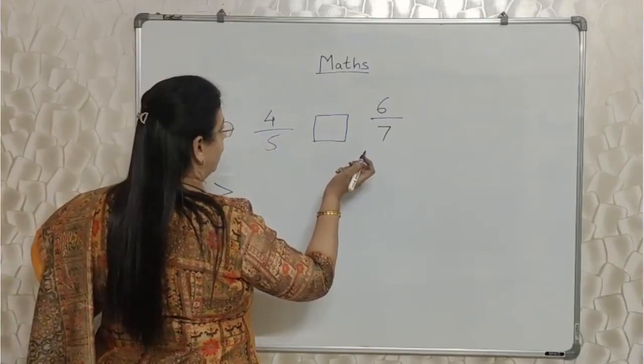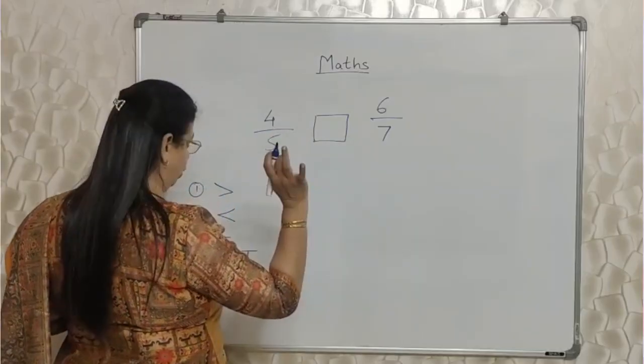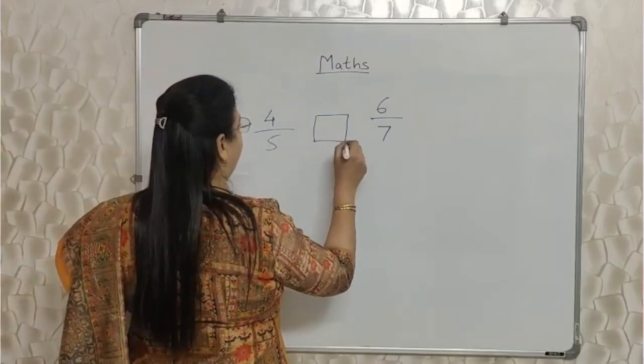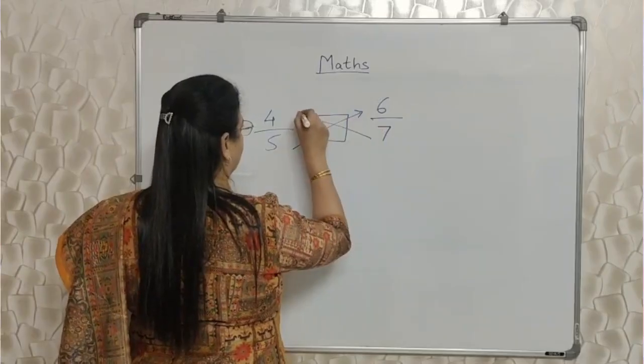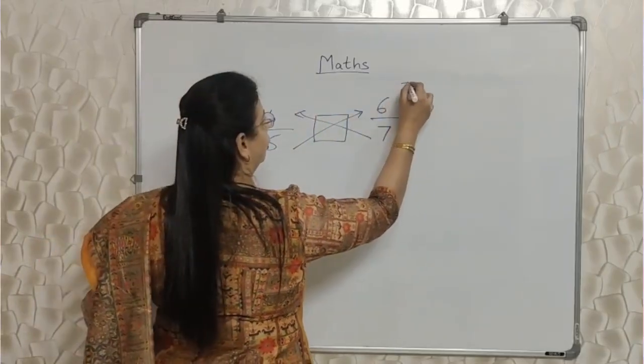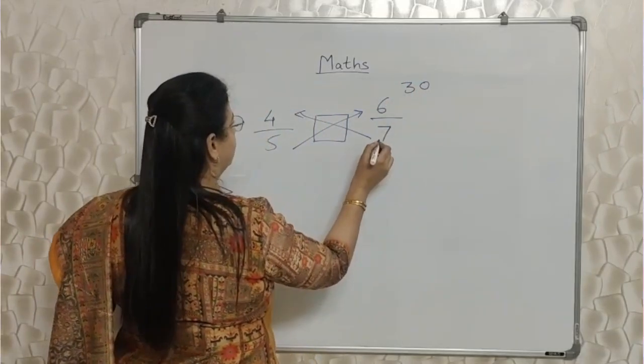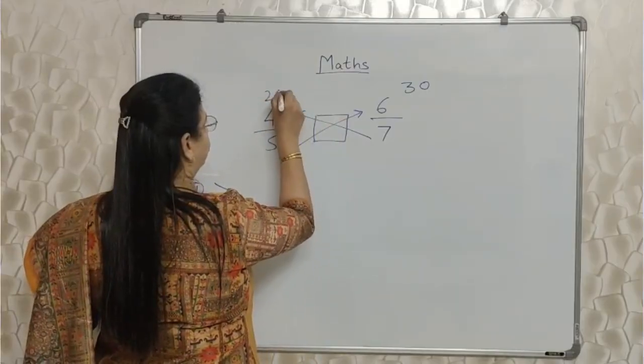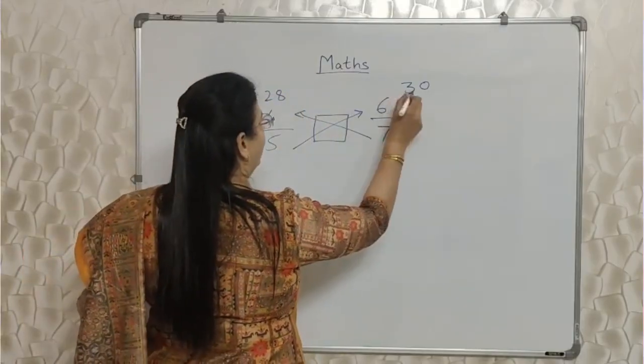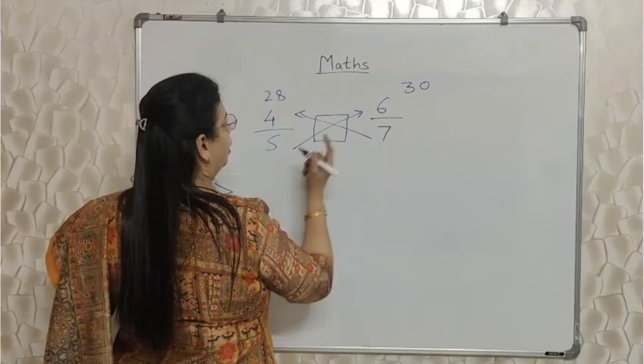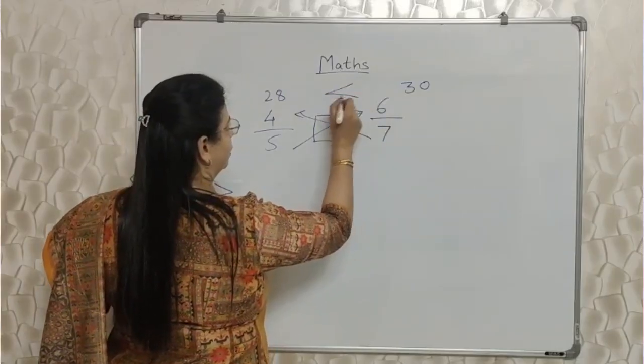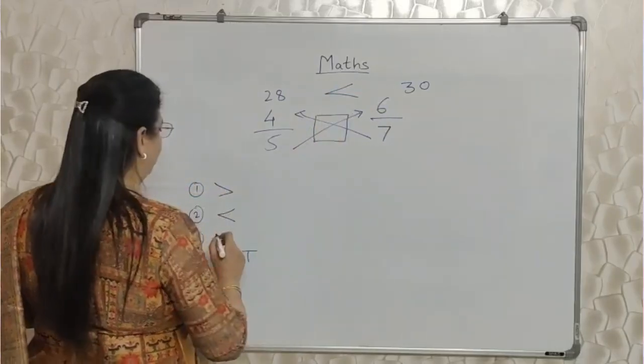So whenever numerators or denominators are not matching, you can straight away do the cross multiplication. 5 into 6, 30 you should write here. 7 into 4, 28 you should write here. Compare this - which is bigger? 30. So obviously, your answer is second.